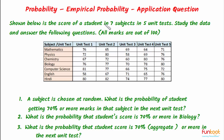Let's do this question. Shown below is the score of a student in 7 subjects in 5 unit tests. Study the data and answer the following questions. All marks here are out of 100. This is the data of a student in 7 subjects from mathematics till Hindi, and we have marks for 7 subjects in 5 unit tests. We have to answer these questions.